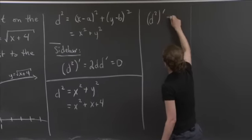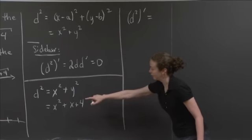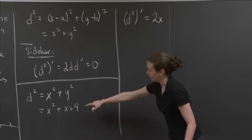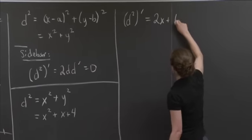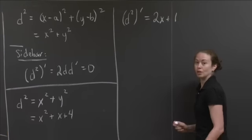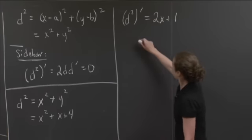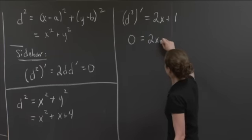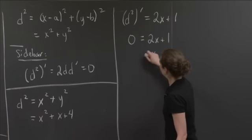So d squared prime: the derivative of x squared is 2x, the derivative of x is 1, and the derivative of 4 is 0. This will be optimized when this is equal to 0. So 0 equals 2x plus 1. So x is equal to minus 1 half.